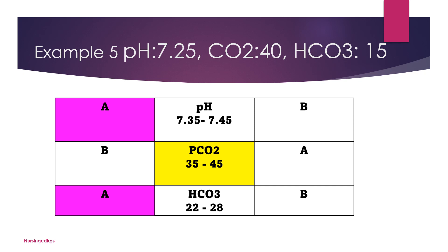In example five: pH 7.25 — towards acidic; PaCO2 40 — normal; bicarb 15 — acidic. The bicarbonate corresponds to the pH, so we have a metabolic issue — metabolic acidosis. There is no compensation because the PaCO2 is in normal range and the pH is still below normal. What is happening is excessive production or inadequate removal of acids leading to increased acidity. Answer: uncompensated metabolic acidosis.